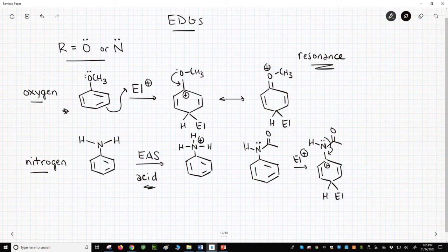Nitrogens with lone pairs can act as electron-donating groups, but the nitrogen needs to be some kind of amide nitrogen, not an amine nitrogen. That covers the common EDG groups for aromatic reactions.